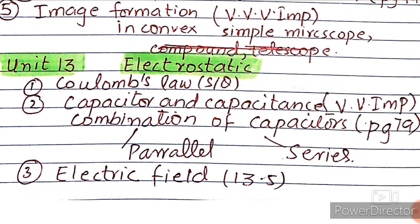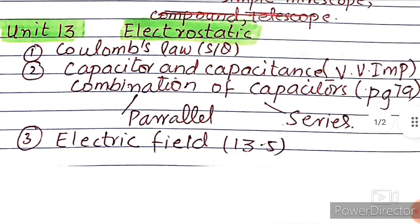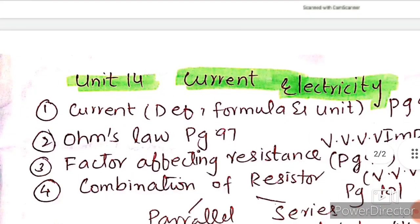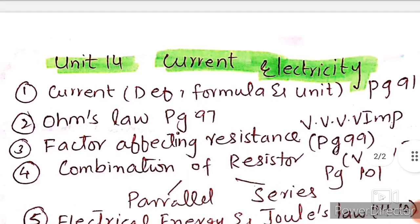Last topic is 13.5, electric field and electric field intensity as a short question. Next chapter is chapter number 14, Current Electricity. First topic is current: definition, formula and unit on page number 91.